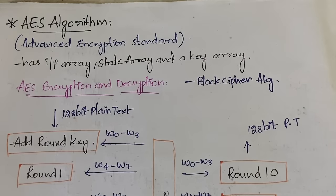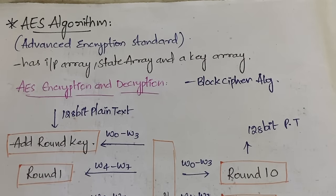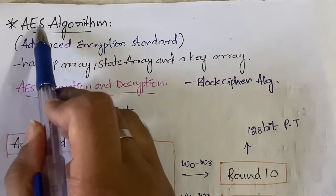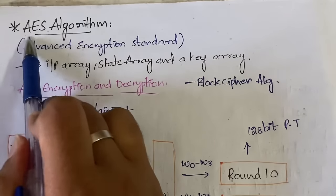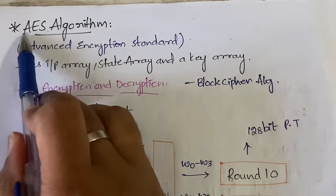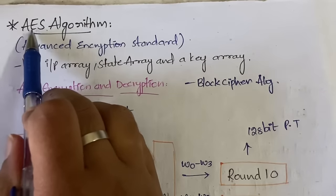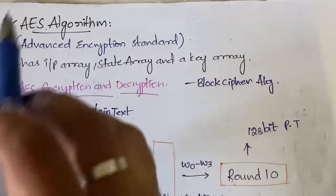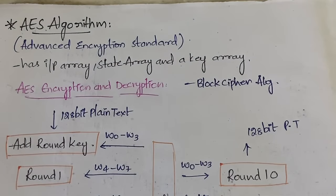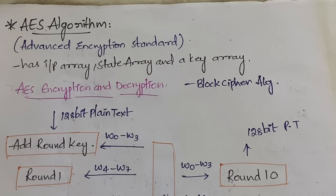Hello everyone, welcome back to my YouTube channel Trouble Free. In today's video we are going to learn about the AES algorithm. AES stands for Advanced Encryption Standard. In the previous video we learned about the DES algorithm, which is Data Encryption Standard. We are going to learn how the AES algorithm works, how many rounds it has, what happens in each round, and everything. Make sure you watch the video till the end so you can understand it more clearly.